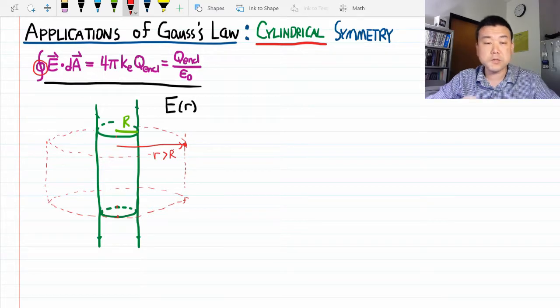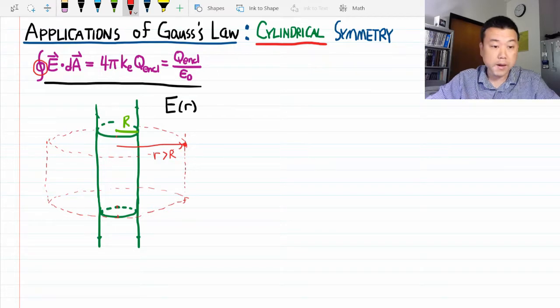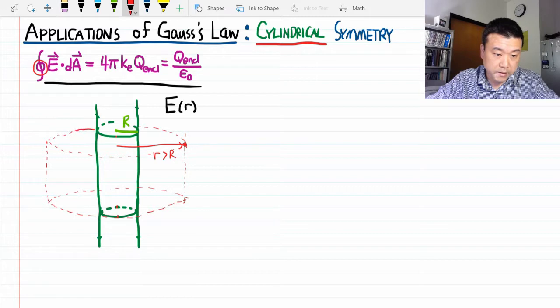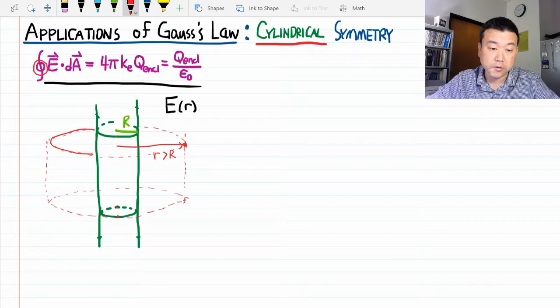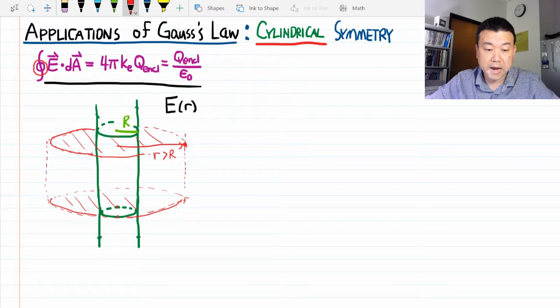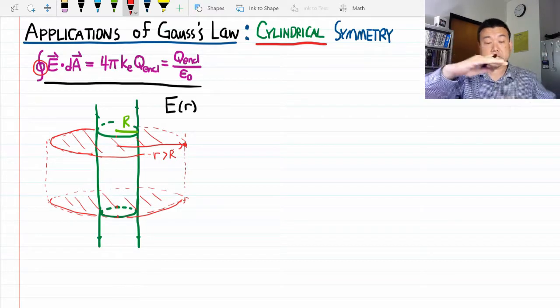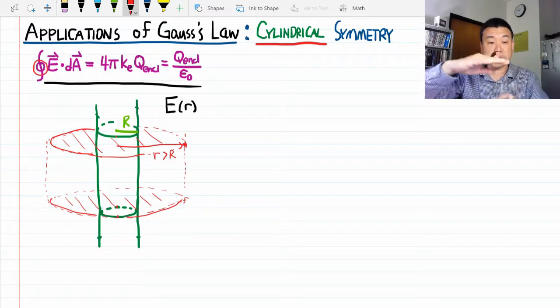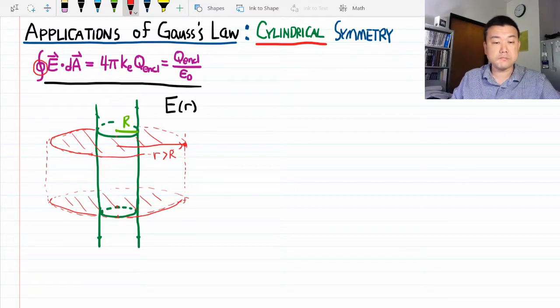You have to close up the surface somehow to use Gauss's Law. The way to do it is to close it up with these end caps. Instead of this being just an indicator of the cross-sectional area, that is my actual closing surface, top and bottom. The side surface closes the rest, giving us a finitely long closed cylindrical surface.